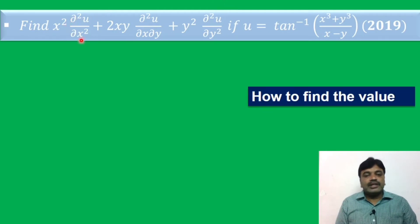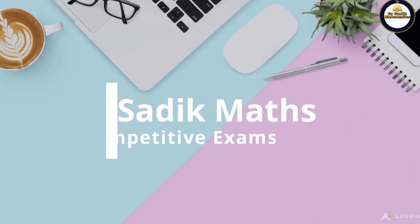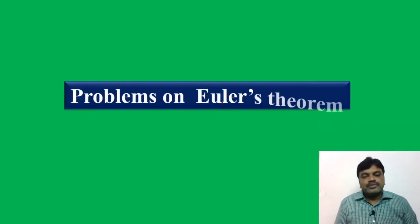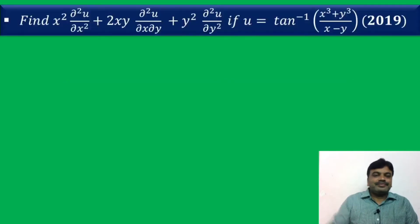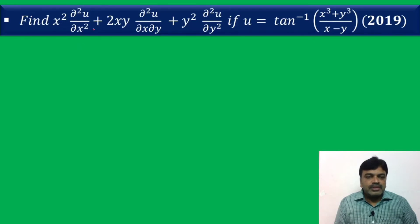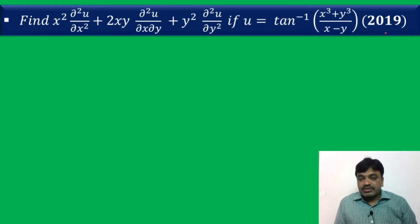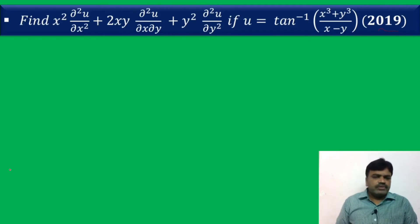How to find this value, friends, and which is the suitable method to find this value? We discuss problems on Euler's theorem. Let us see the problem. This question is from 2019, so it is a previous year question — very, very important, friends. Let us see the solution.